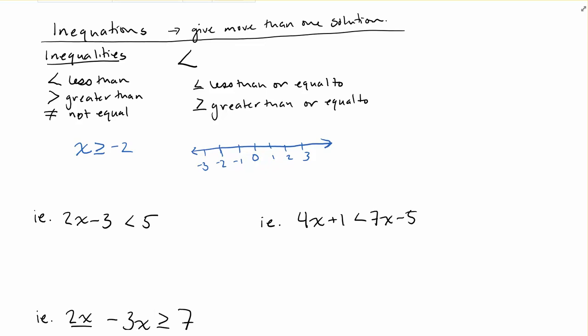An example would be x is less than 2. The word inequation might come from 'in' meaning it's not equal. You can think about 'incomplete' as a word you might be familiar with, and incomplete means it's not complete yet. So an inequation means it's not really an equation, there's not just one thing that it equals.